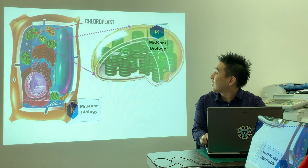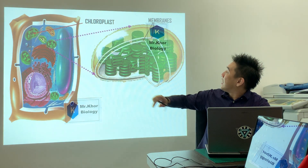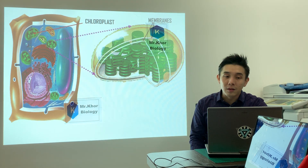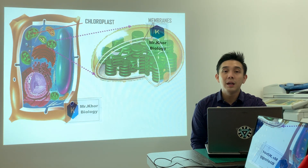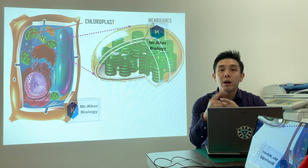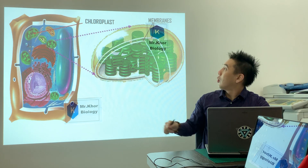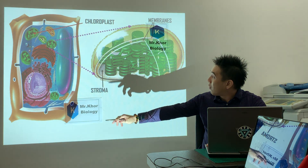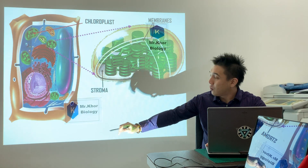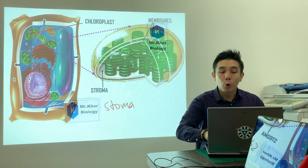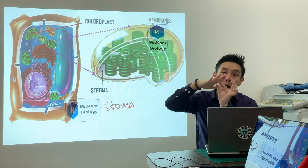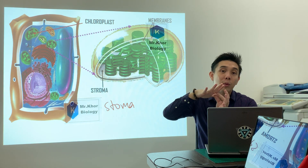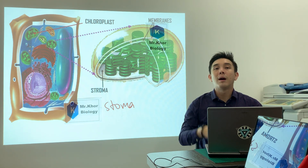To learn photosynthesis, we must first know the structure of the chloroplast. We covered this in Form 4 Chapter 2 on organelles. There are two organelles with a double membrane that are frequently tested: mitochondria and chloroplast. Chloroplast has a double membrane, and its fluid is called stroma — don't confuse this with stoma, which is the pore found on the underside of a leaf, controlled by guard cells.